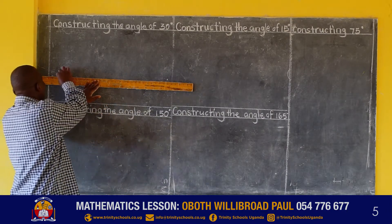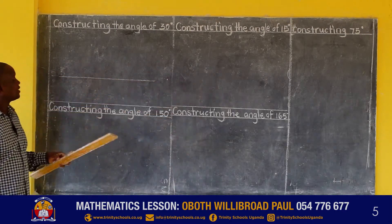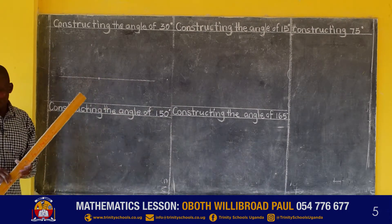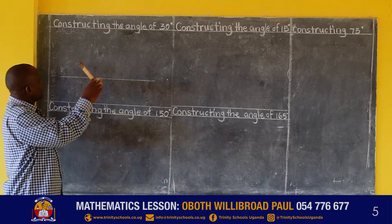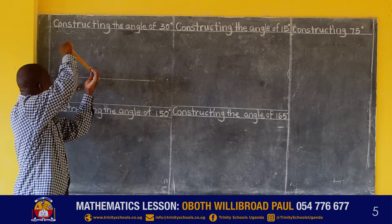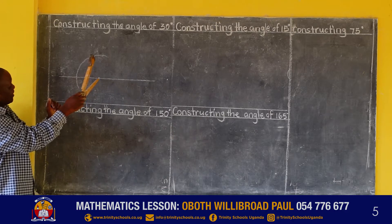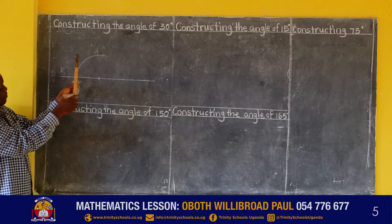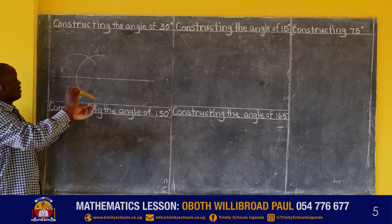So you start by drawing your line, which I'm calling the starting line. Mark a point on that line, and get your pair of compasses. Draw an arc. Then, without changing the radius, place your pair of compasses at the point where the arc cuts the line, and draw another arc to cut the first arc.